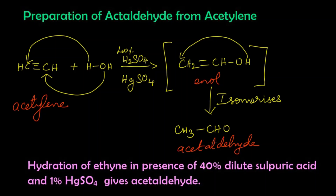To summarize: acetaldehyde can be prepared from acetylene by hydration in the presence of 40% sulfuric acid and 1% mercuric sulfate, which gives acetaldehyde.